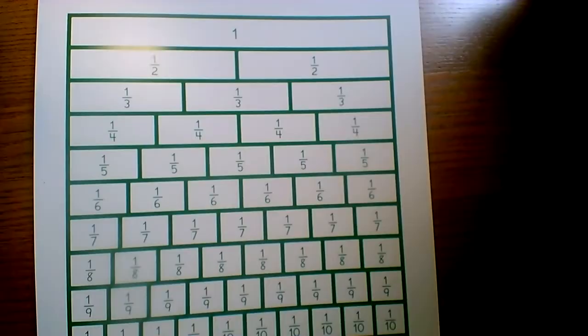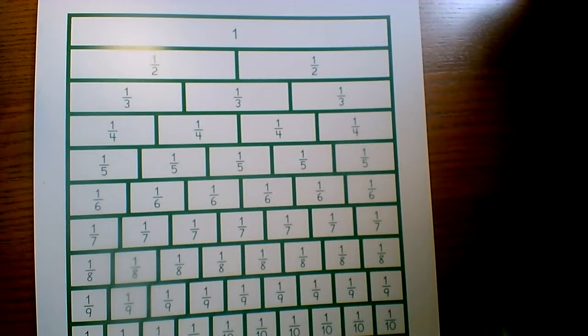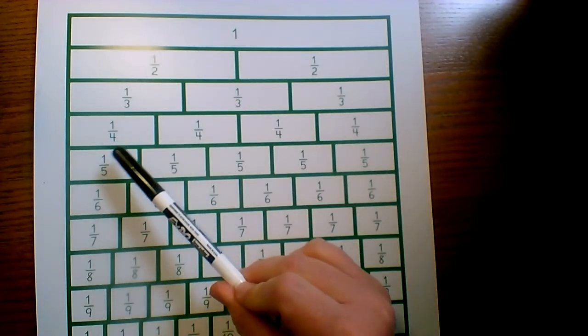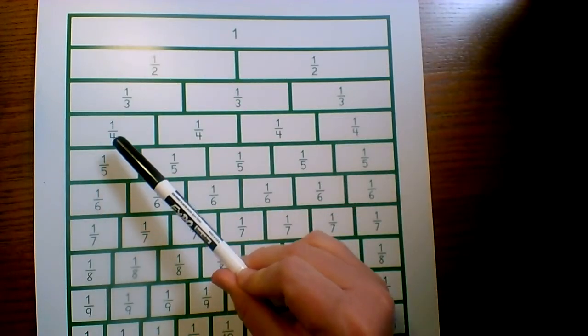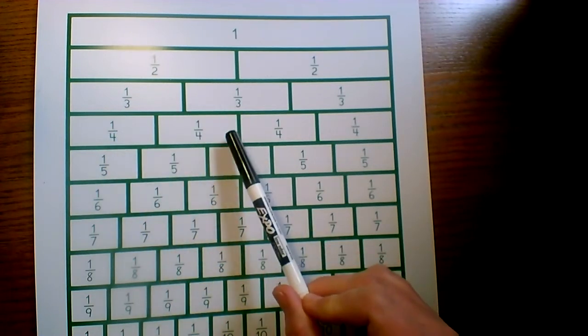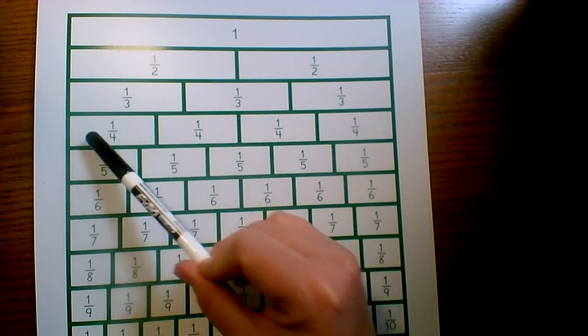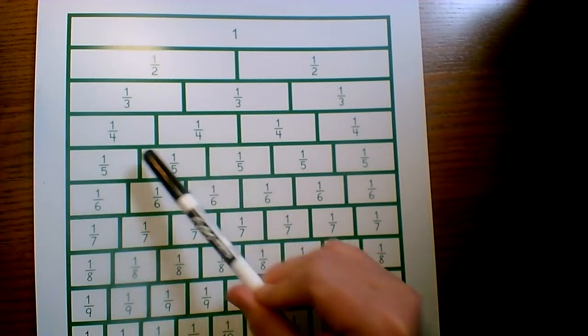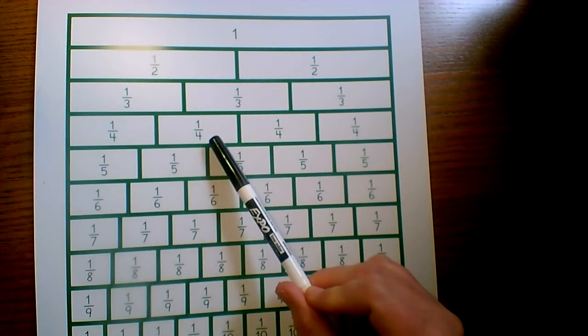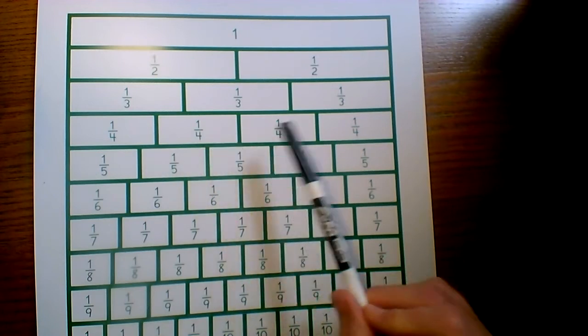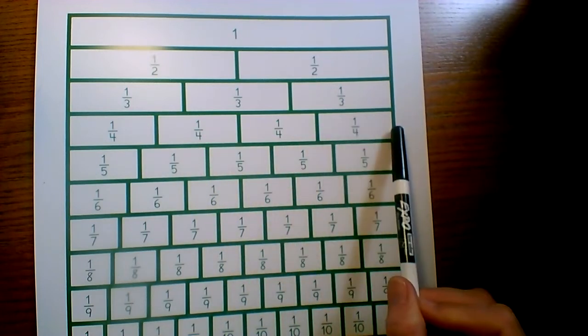Let's look at what skip counting with fractions looks like. The very first exercise we're doing is with the fourths. I would have my child say: one fourth, one half — because two fourths is one half — three fourths, one. That's what skip counting looks like with fractions.